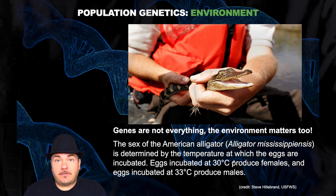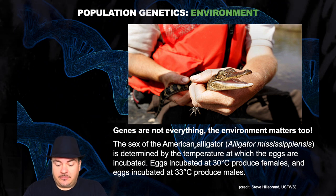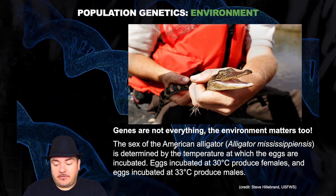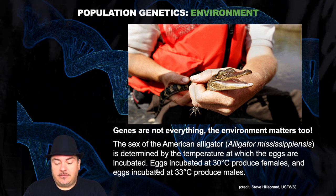Of note, it's not only your genes that affect things — it's also your environment. For example, the American alligator. The sex of the American alligator is actually determined by the temperature at which the eggs are incubated. Eggs incubated at 30 degrees Celsius produce females, and eggs incubated at 33 degrees Celsius produce males.